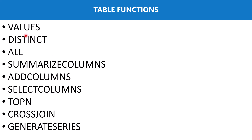The functions we are going to explore include VALUES, DISTINCT, ALL, SUMMARIZECOLUMNS, ADDCOLUMNS, SELECTCOLUMNS, TOPN, CROSSJOIN, and GENERATESERIES. We will look at the definition of each function on the DAX.guide website and then see how each function is used to create a table inside the Power BI Desktop environment.